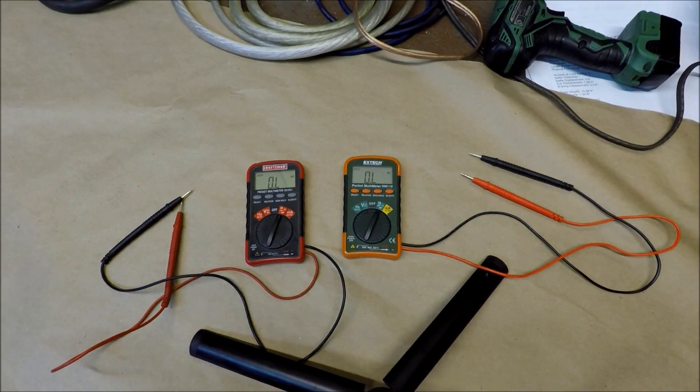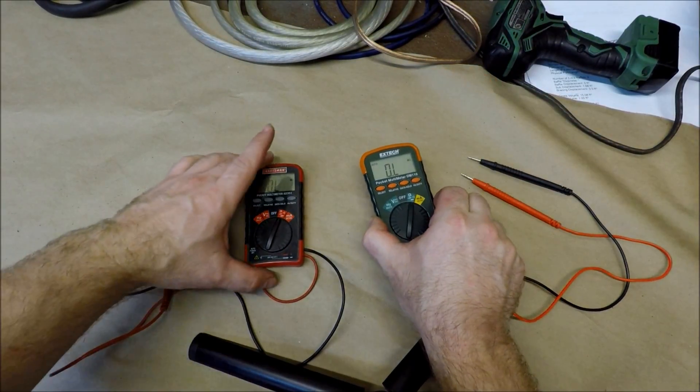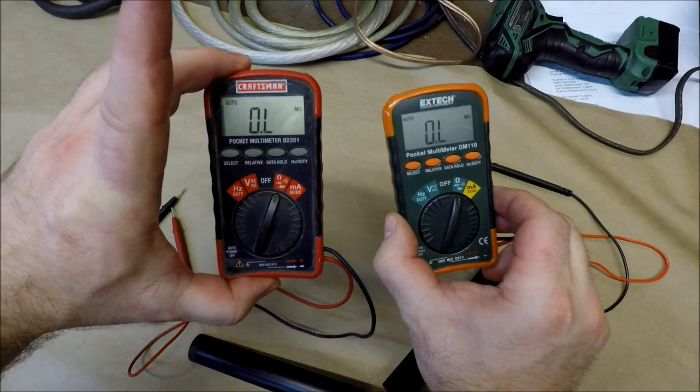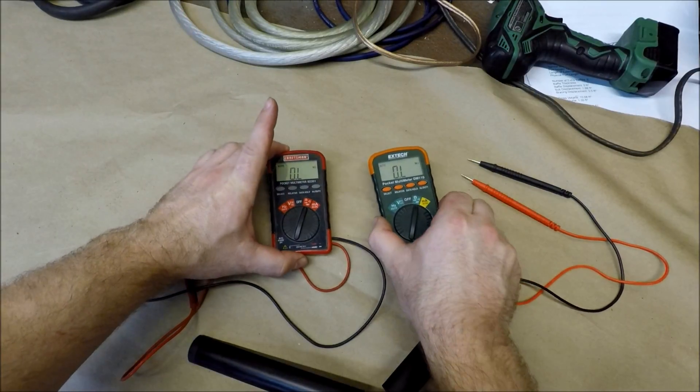Alright, here on the test bench I have two DMMs. One is made by X-Tech, one is made by Craftsman. They both look extremely similar, almost identical, but they are not and I'm going to show you why.